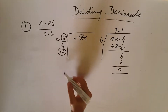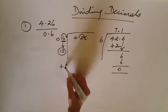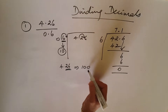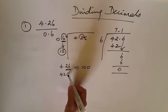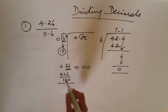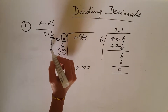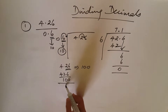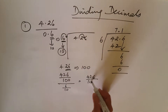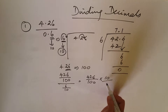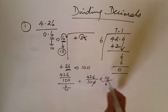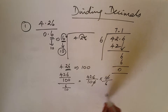Another method: 4.26 is at the 100th digit place, so write it as 4.26 over 100. The divisor 0.6 is at the 10th digit place, so write it as 6 over 10. This gives 4.26 over 100 multiplied by 10 over 6. The 10s cancel.